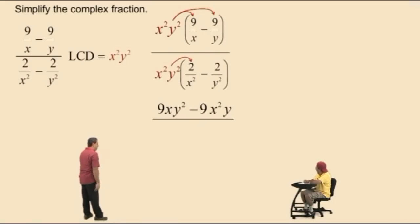Now let's move to our denominator. We'll multiply our LCD to 2 over x squared. This time we cancel out the x squareds leaving us with 2y squared. And finally, we multiply our LCD to 2 over y squared, cancelling out the y squareds leaves you with 2x squared.